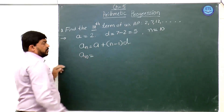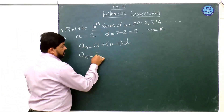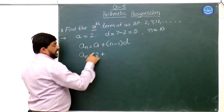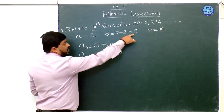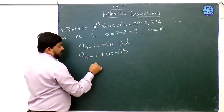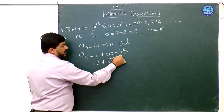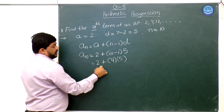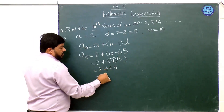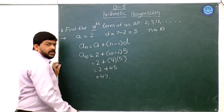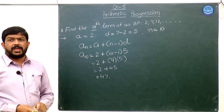Using the general formula aₙ = a + (n-1)d with n = 10: a₁₀ = 2 + (10-1) × 5 = 2 + 9 × 5 = 2 + 45 = 47. This is how we can find the nth term of an AP.